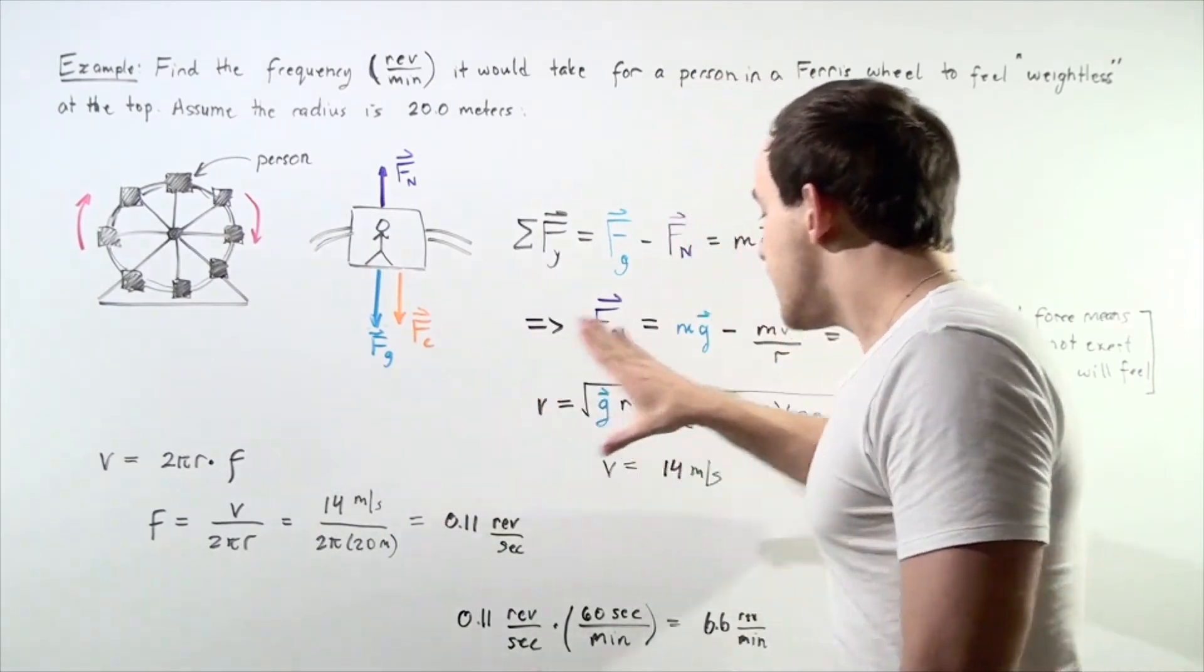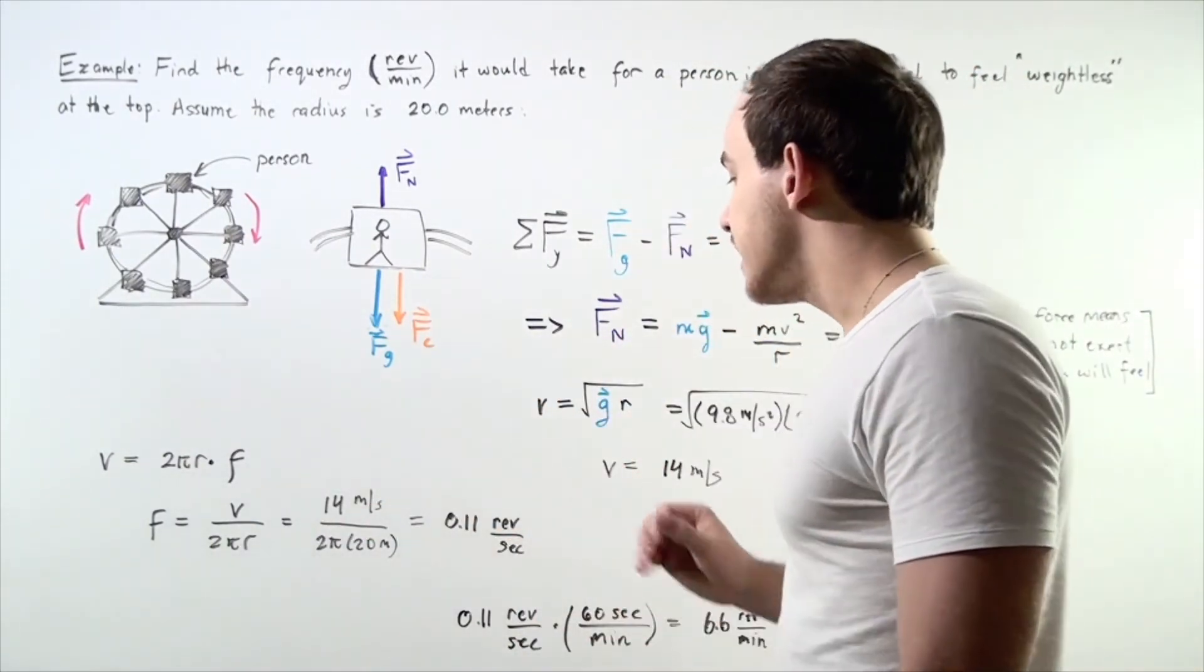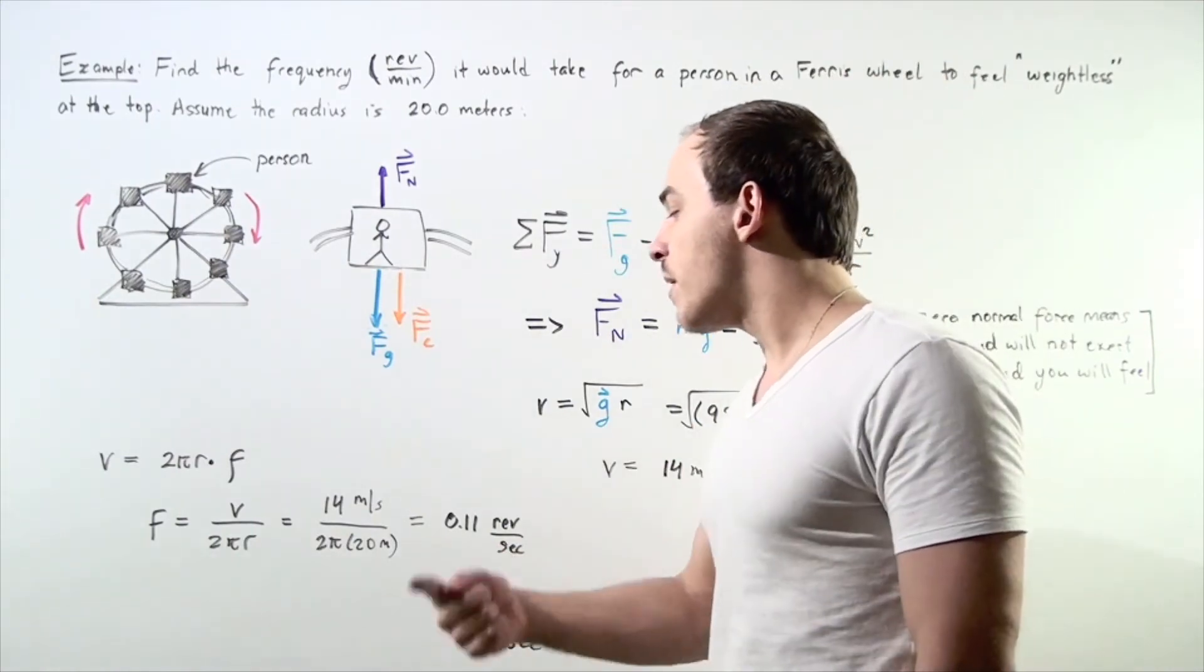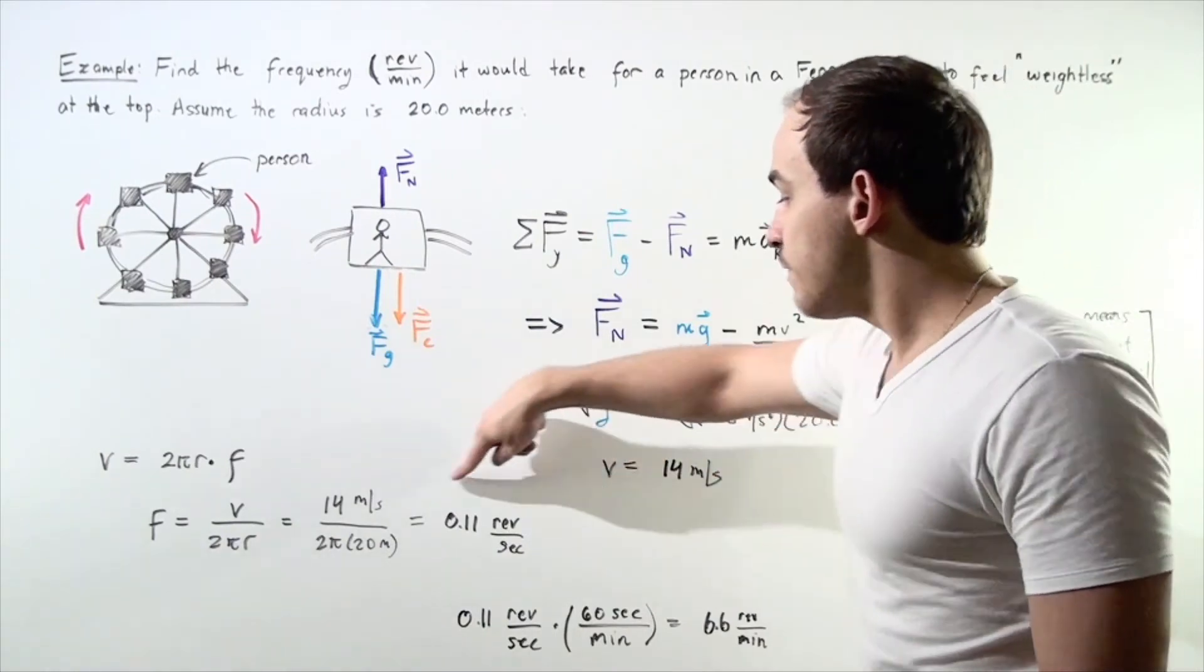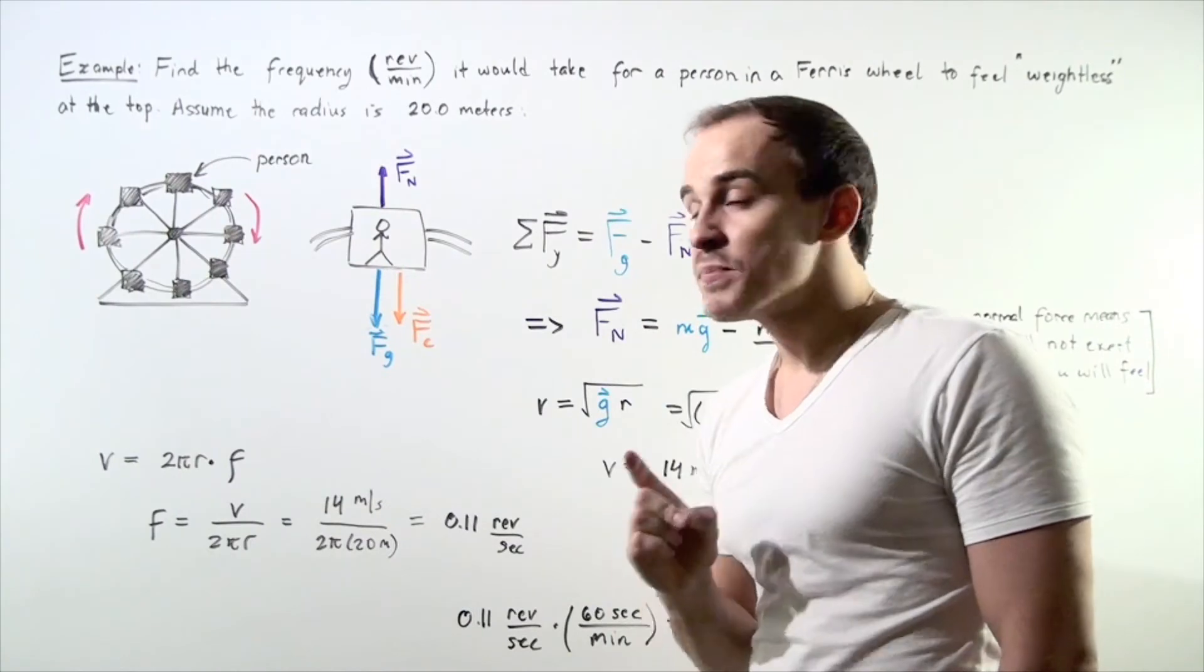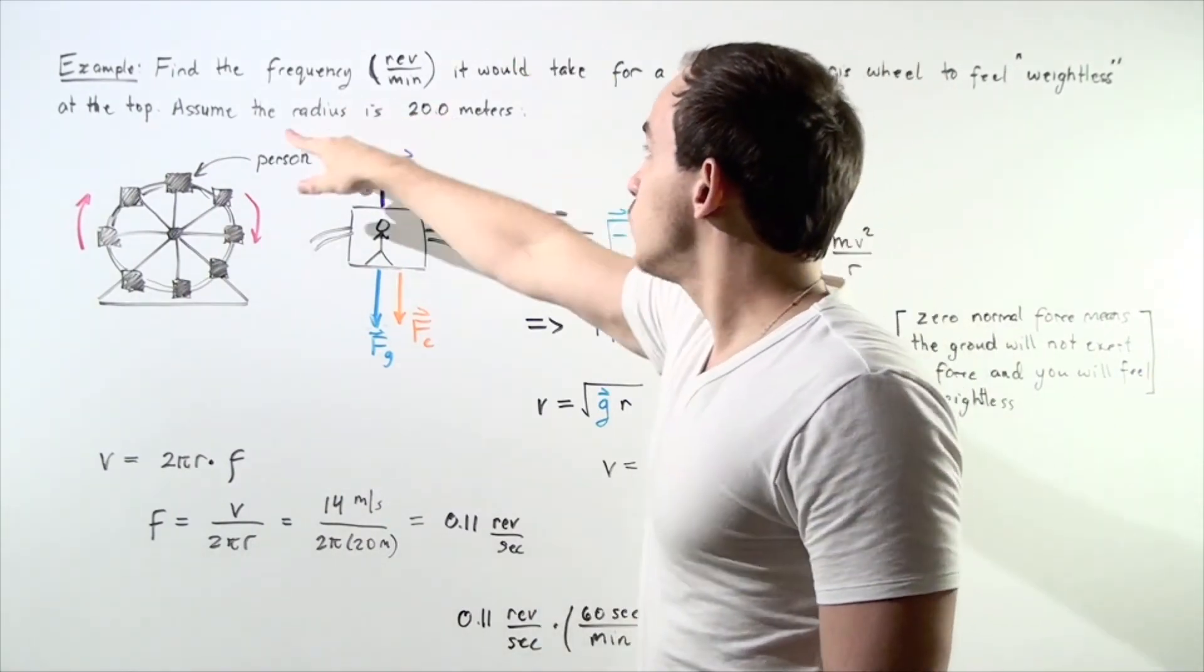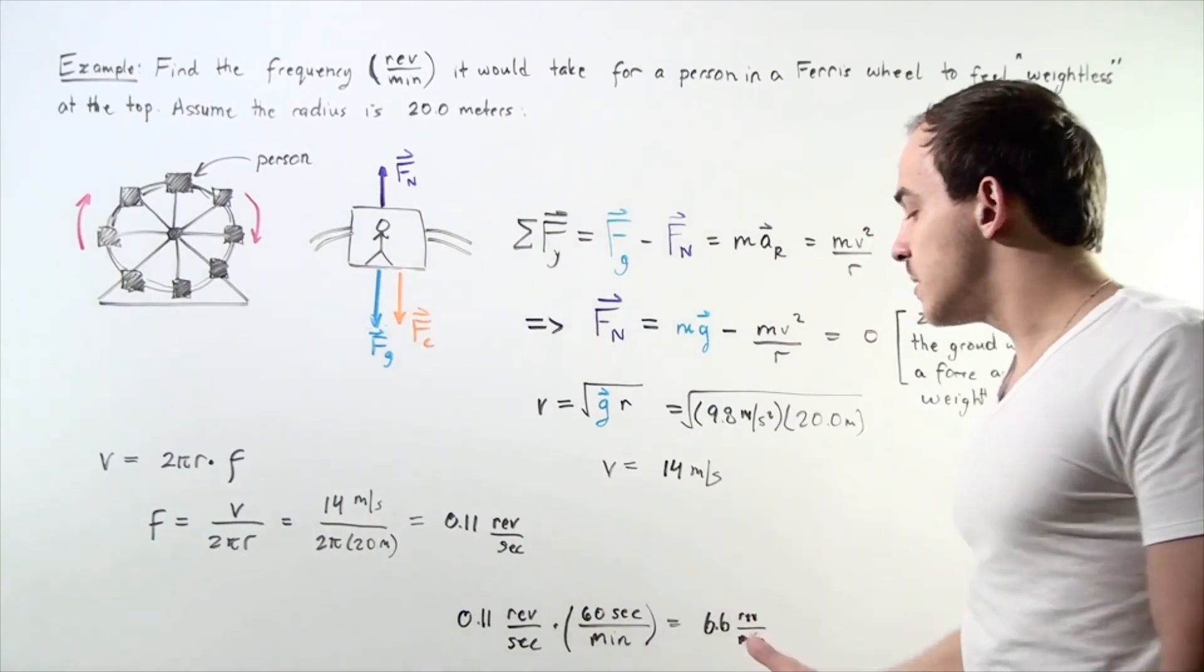We found in this part that our velocity is 14 meters per second. Divide that by 2 times π times radius of 20 meters and we get the following frequency. So 0.11 revolutions per second but we're asked to find the frequency in revolutions per minute. That means we need to do a simple conversion.